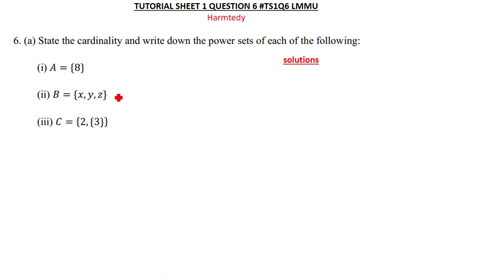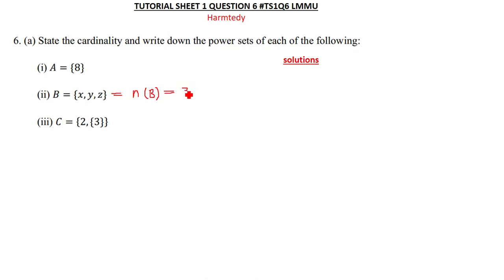Moving on to set B. The cardinality of set B is three, meaning we have only three elements in set B. Apart from that, we'll find the power set of set B, which is denoted by P(B).